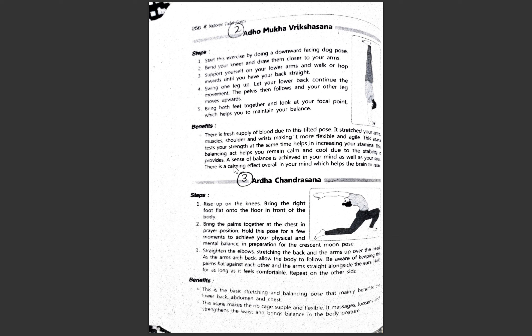The next asana is Adho Mukha Vrikshasana. Due to this tilted, inverted pose — opposite to gravity — there is a fresh supply of blood into your body. It stretches the arm muscles, shoulders, and wrists, making them more flexible and agile. It enhances flexibility and strength, increases stamina, and promotes a calm and cool sense of balance in both the mind and soul, helping the brain to relax.